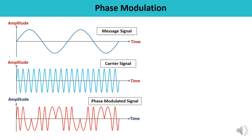The other type of angle modulation is phase modulation. In phase modulation, the phase angle of the carrier is varied according to the message signal. From the waveforms, when the message signal goes from 0 to maximum value, the carrier remains the same, but when it goes from maximum to minimum value, there is a change in phase. Going from minimum back to maximum again produces a change in phase.